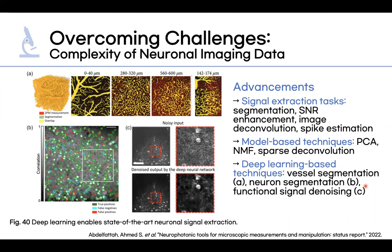Moreover, in recent years, data-driven machine or deep learning-based techniques have achieved great performance in various tasks, including vessel segmentation shown in figure A, and neuron segmentation shown in figure B. In this graph, green shows true positives, blue false negatives, and red false positives — there are far more green than any other color, indicating many more true positives than false negatives or false positives. There is also functional signal denoising shown in figure C, where the top two images show noisy input and the bottom two images show the denoised output.